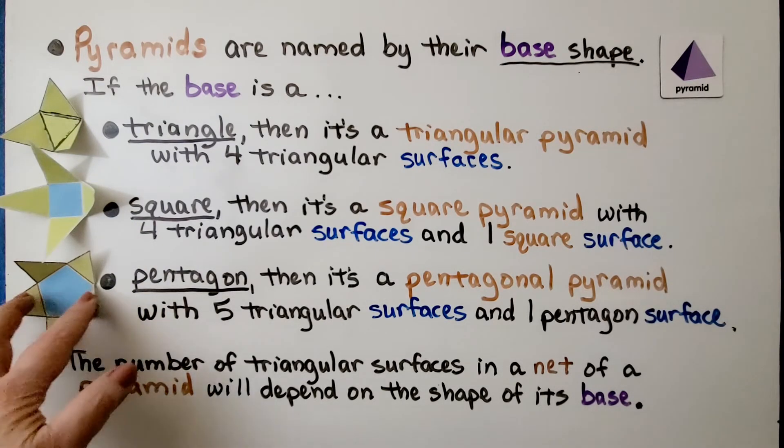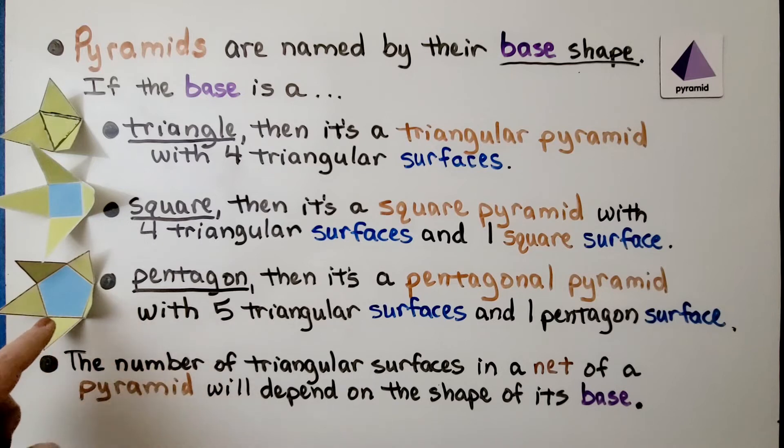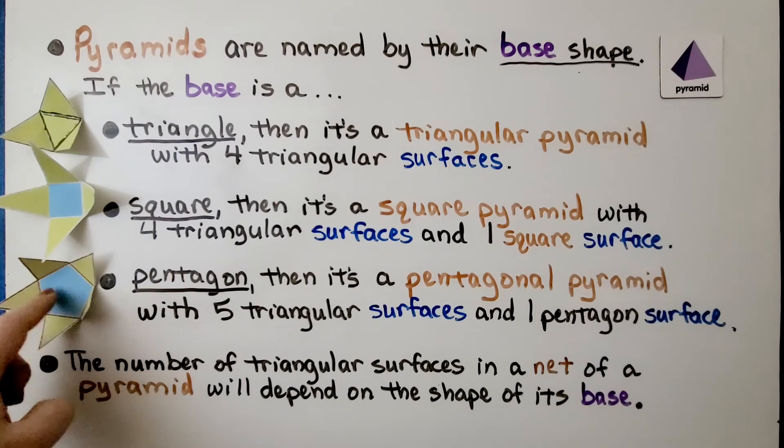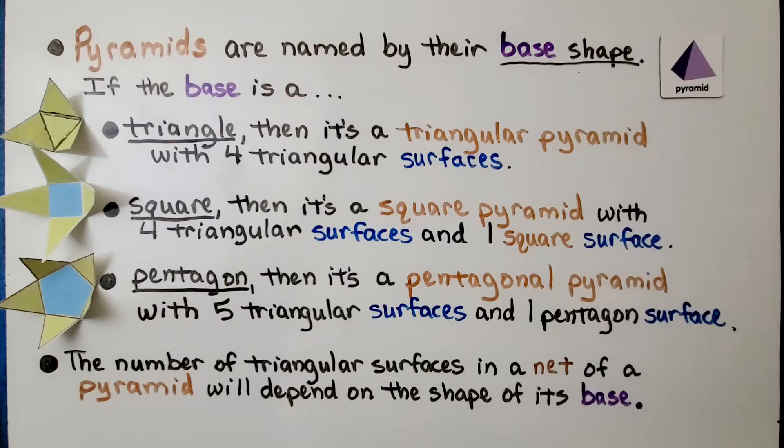If it has a pentagon for a base, then it's a pentagonal pyramid with five triangular surfaces and one pentagon surface. The number of triangular surfaces in a net of a pyramid will depend on the shape of its base.